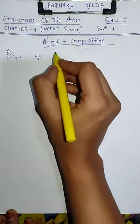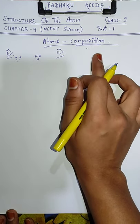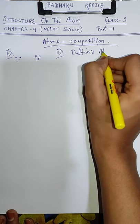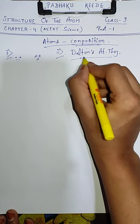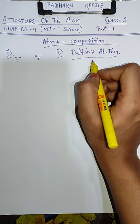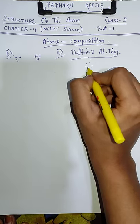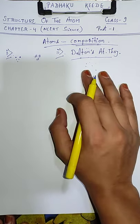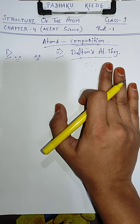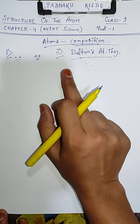The first point was: what makes atoms of one element different from atoms of another element? The next point that forced scientists to think was: are atoms really indivisible as proposed by Dalton? Dalton's Atomic Theory mein hamne padha tha ki atom is the smallest particle of any matter and it is indivisible. But scientists thought there are still chances ki atoms ke andar aur bhi small particles exist karte hoon. Ho sakta hai atoms are still divisible.